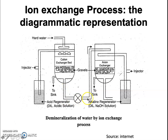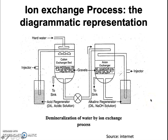When this water is allowed to pass through the anion exchange resin — a similar vessel containing gravels that support the anion exchange resin — all the anions get trapped into this bed. The water coming out as a result of the treatment process contains H⁺ ions and OH⁻ ions. Finally, the water ejected contains only H⁺ ions and OH⁻ ions, which combine to give demineralized water. This is the process of demineralization by the ion exchange process.